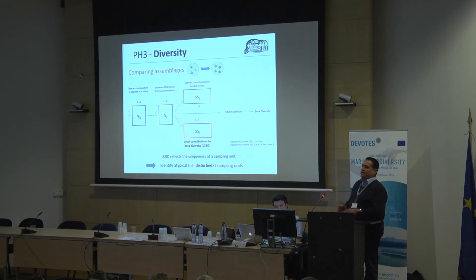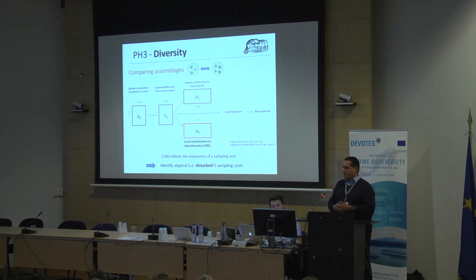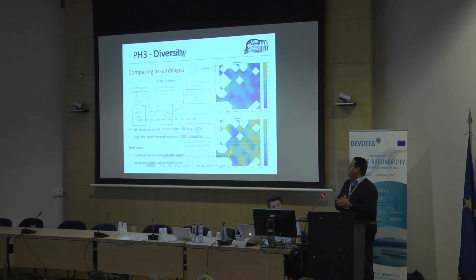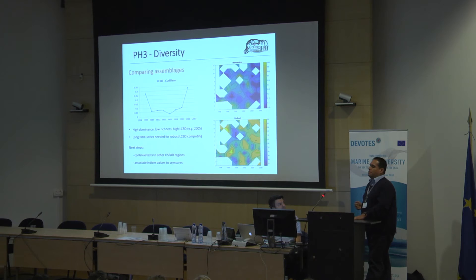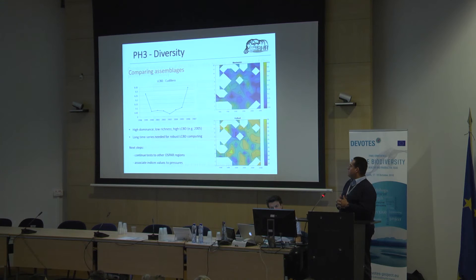After describing biodiversity and comparing assemblages, we move to beta diversity, mainly using the local contributions to beta diversity (LCBD) that reflects the uniqueness of a sampling unit — typical or disturbed sampling units that can be timed. For example, this station in the South Bay of Biscay, the Cudillero Station, shows the Margalef richness index, the dominance, and then the opposite of one: high dominance, low richness, and then high LCBD — local contribution to beta diversity.